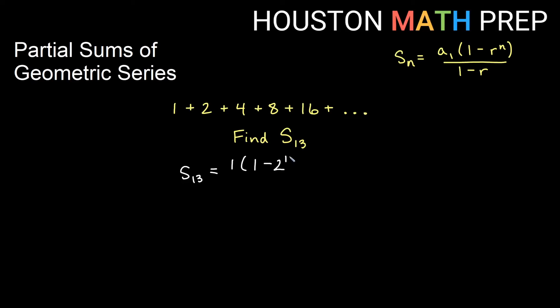Over 1 minus r, which is 1 minus 2. We'll go ahead and just type this into a calculator. It's a little bit shorter to deal with. 2 to the 13 is still pretty big and we get an answer for this one of 8,191.